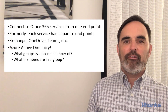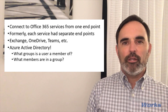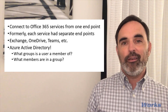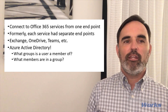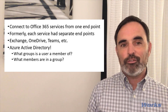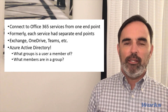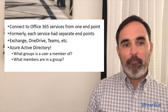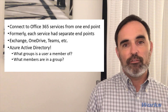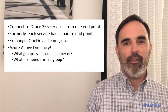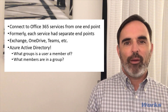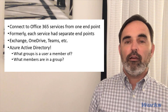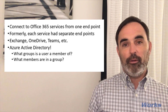Microsoft Graph is an API that you can use to connect to a variety of Office 365 services. It's a single endpoint that gets you access and functionality into tools such as Exchange, OneDrive, or Teams. Previously a lot of these services had their own API and endpoint, and Microsoft Graph is a consolidation of all of these Office 365 services into a single endpoint.